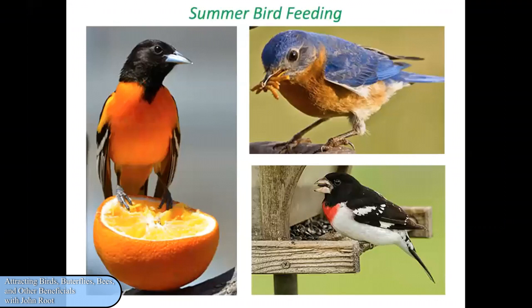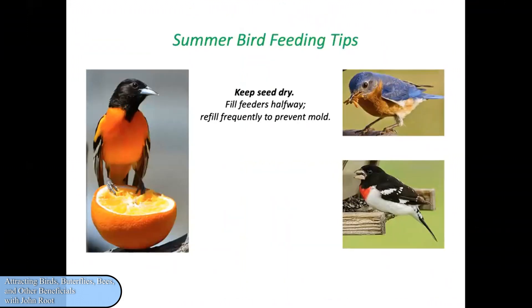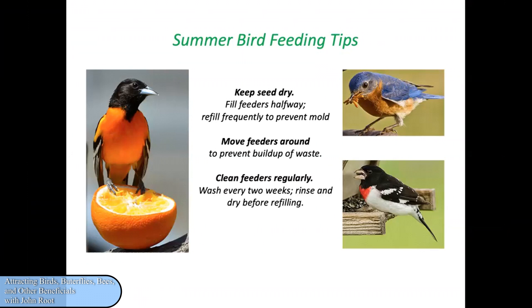Summer bird feeding is perfectly okay. Orioles love oranges. Bluebirds appreciate mealworms, either dead or alive — you can buy them at the grocery store. Rose-breasted grosbeak and other birds will appreciate sunflower seeds. If you do feed birds in the summer, keep the seed dry by filling feeders halfway. Otherwise the seed at the bottom might become damp and moldy — and seed that drops below the feeder can also become moldy, which could be fatal to birds. Move the feeders around or make sure it's cleaned up regularly below the feeder. Clean those feeders regularly — wash every two weeks, rinse and dry before refilling.